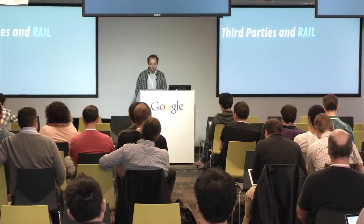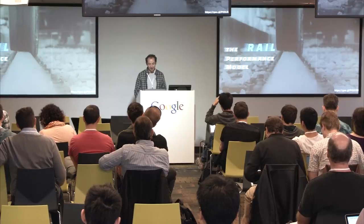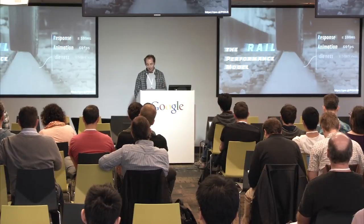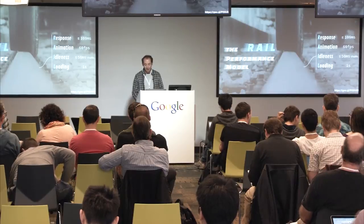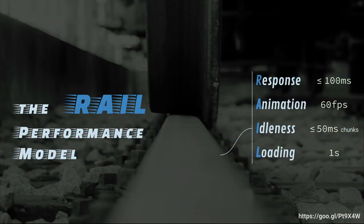Let's get started. The RAIL performance user model is a set of budgets for different states of the user experience. For Response, you should respond to user interaction in 100 milliseconds. Animation should happen at 60 frames per second. Idleness is basically a way to get to responsiveness — you should chunk your work into 50 millisecond pieces or less. And finally, Loading: you should have something meaningful on the screen under one second.